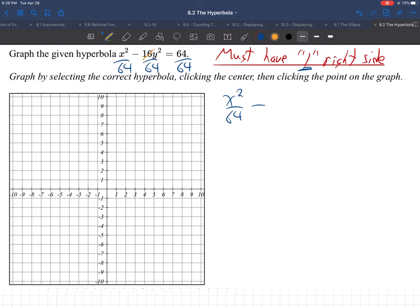So, what does that leave us? x squared over 64 minus, and then this reduces, 16 goes into 64 four times. So, that'll give us y squared over 4 equals 1. That does put 1 on the right side.